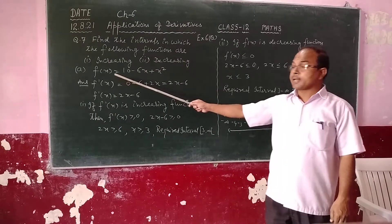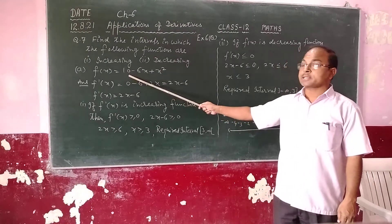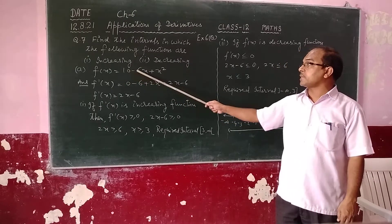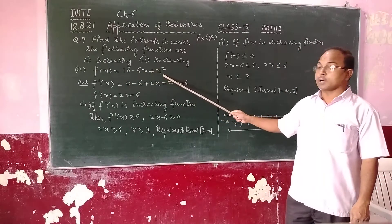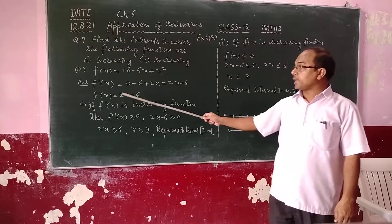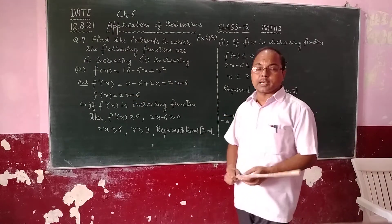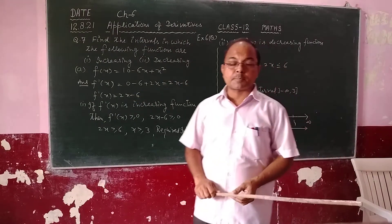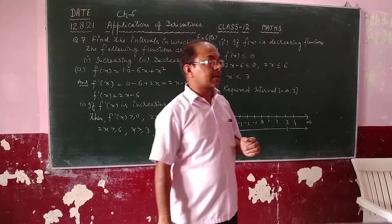The function is f(x) = 10 - 6x + x². First of all, let's check our derivative.